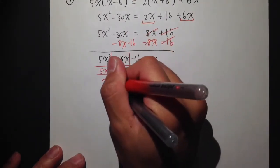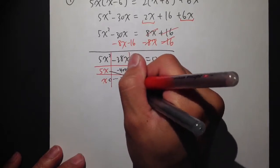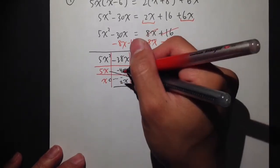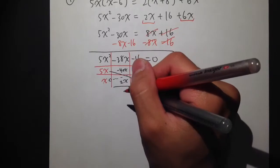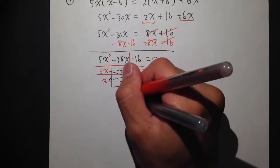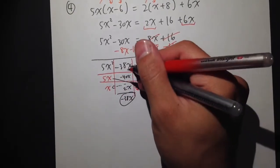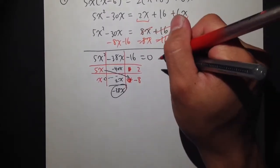And then here, the 2 times x is positive 2x. And when we combine this, negative 40x and then the 2x, it is equal to negative 38x, which is the same as the middle term. So then we did it.